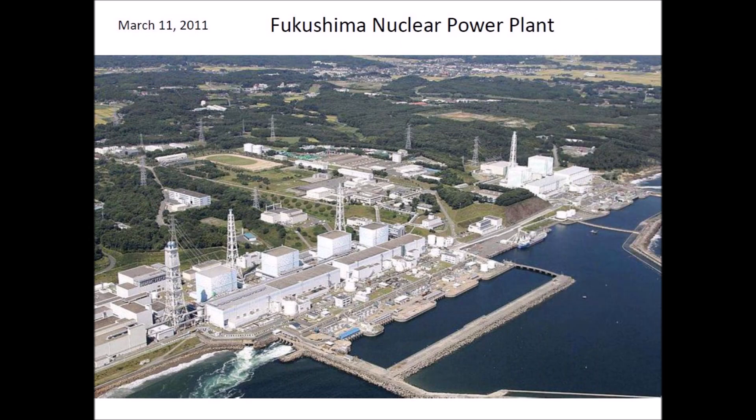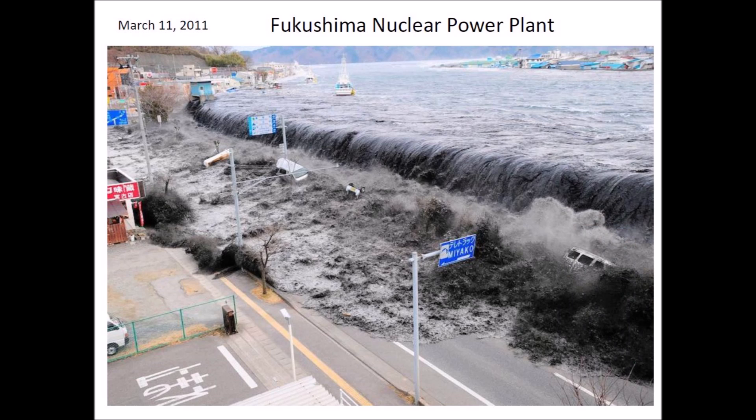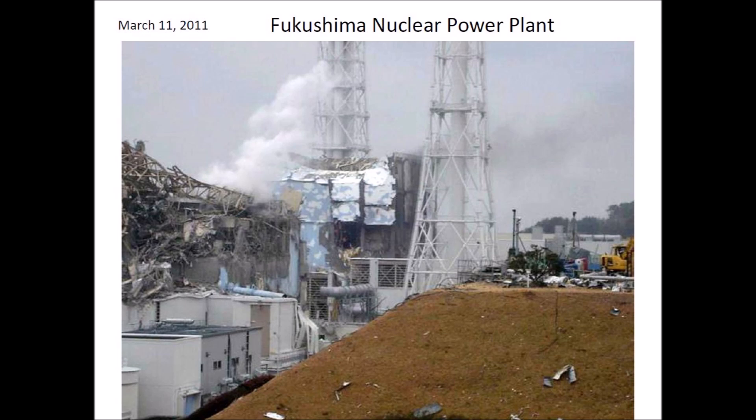The Fukushima nuclear power plant accident was triggered by an earthquake and tsunami on March 11, 2011. When the earthquake was detected, the plant automatically shut down the fission reactors. However, the tsunami — 14 meters high — flooded the lower parts of the reactor area and caused the failure of the emergency generators that powered the circulating pumps. The loss of reactor core cooling led to three nuclear meltdowns, three hydrogen explosions, and the release of radioactive contamination.